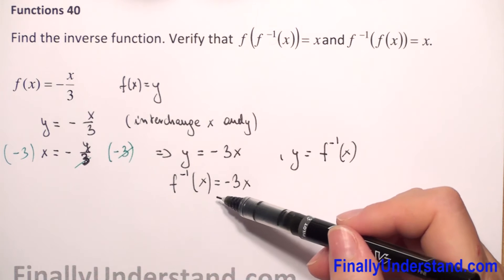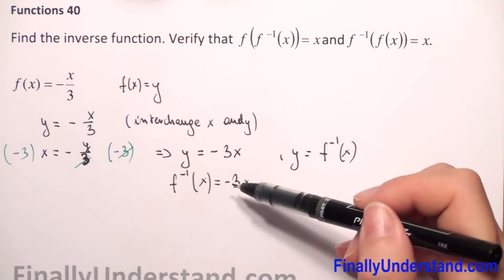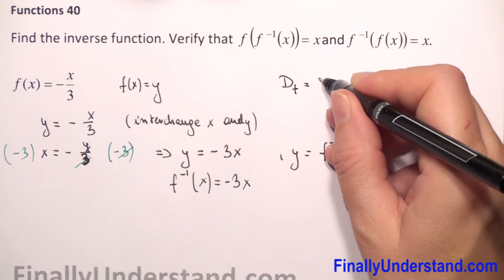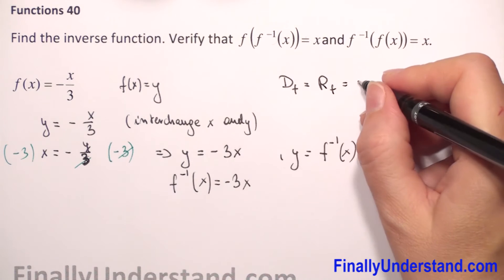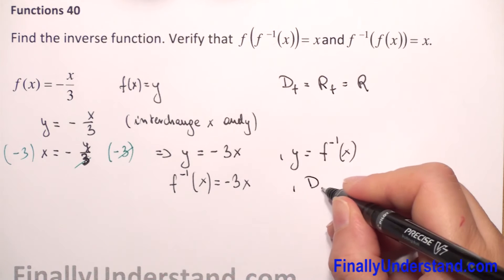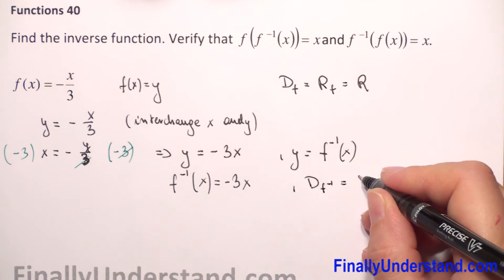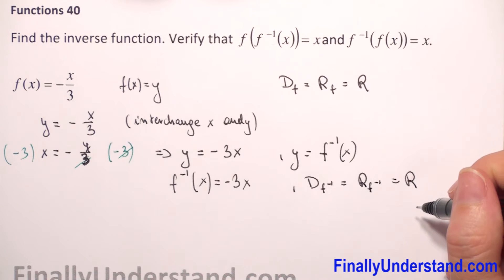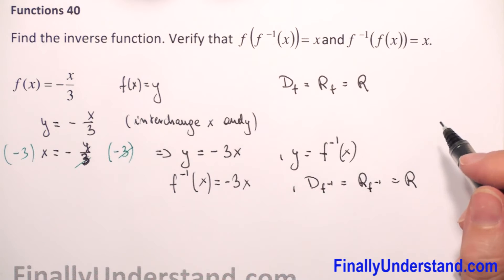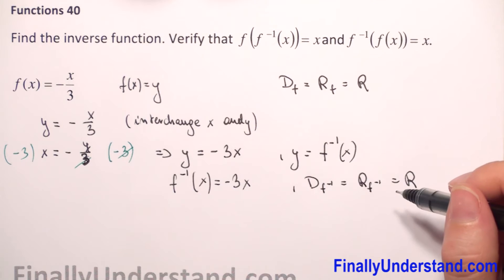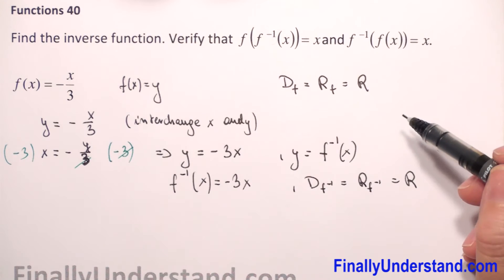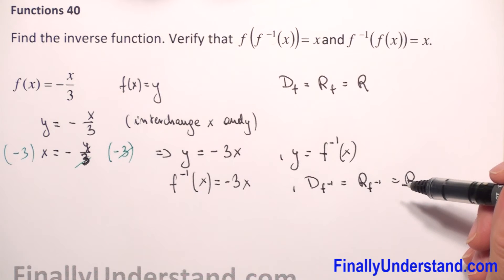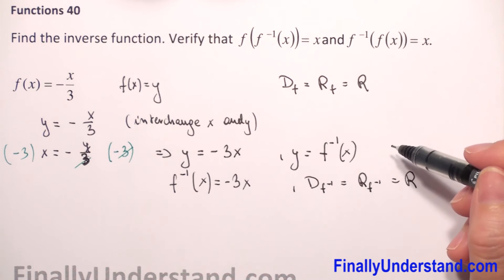Function f and its inverse are both linear functions. The domain of f equals the range of f, and this is all real numbers. The domain of f equals the range of f-inverse, and this is also all real numbers. The domain of f must equal the range of the inverse function, and the range of f must equal the domain of the inverse function. Everything checks out.